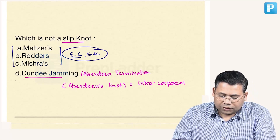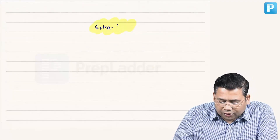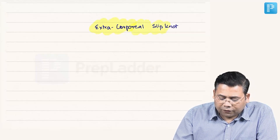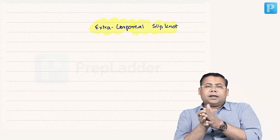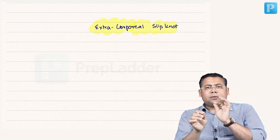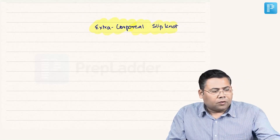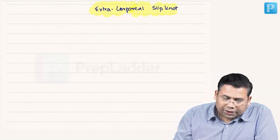Let us talk about what is the concept of extracorporeal slip knots. This is a very simple concept: it is a type of knot which is created outside the body and then it is glided or slipped into the body, and the target is secured. This is what an extracorporeal slip knot is.